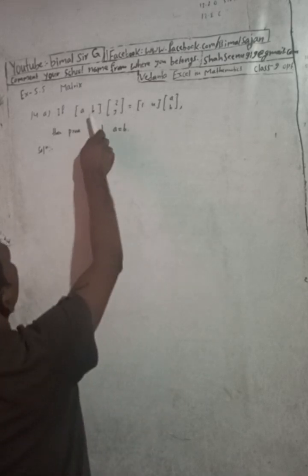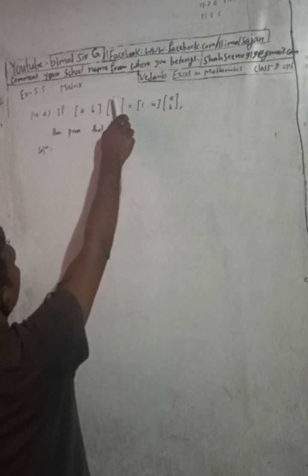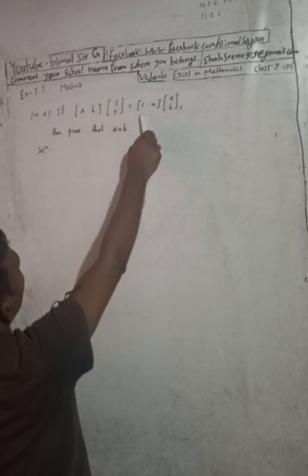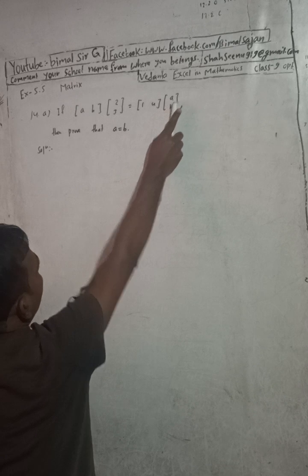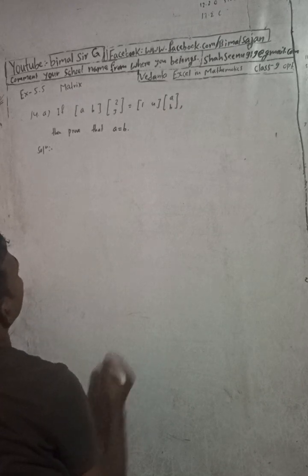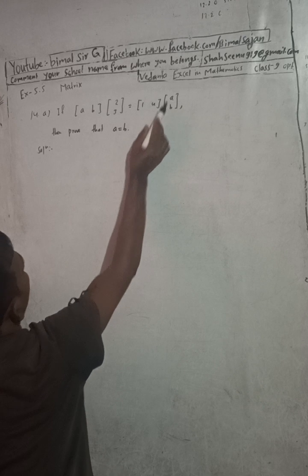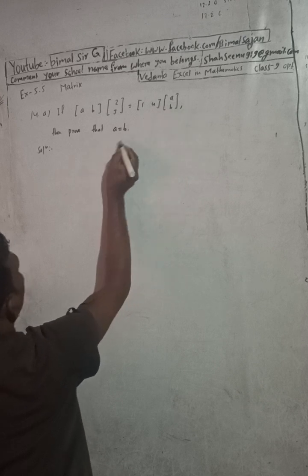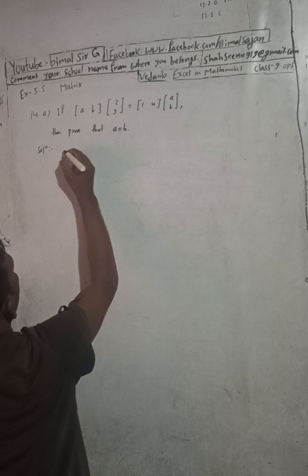This is now 14A. The question is: if AB into [2, 3] is equal to [1, 4]. AB is a row matrix and [2, 3] is a column matrix. You have to prove that a is equal to b.